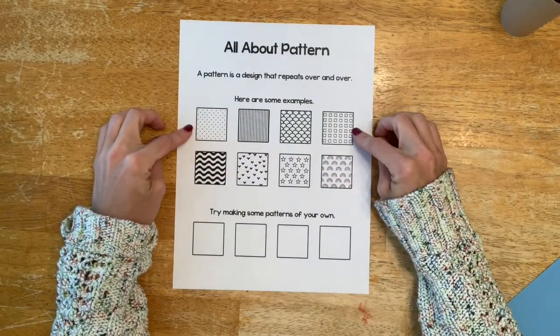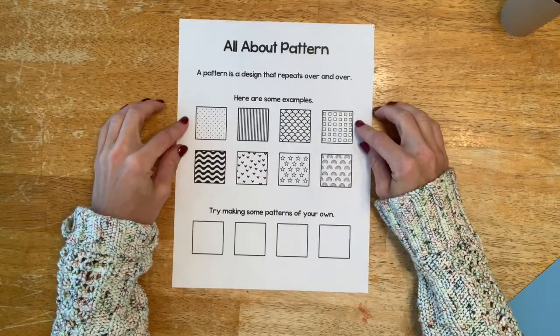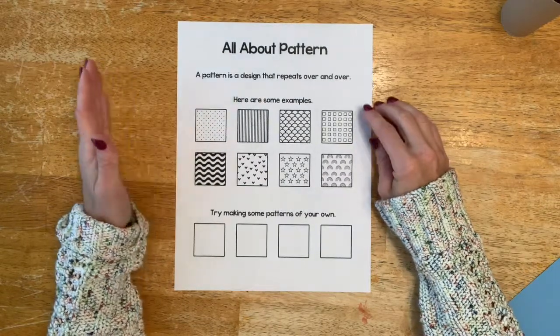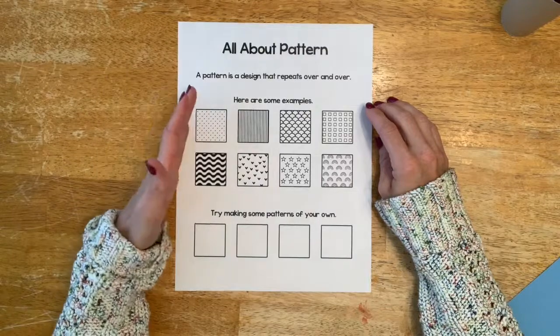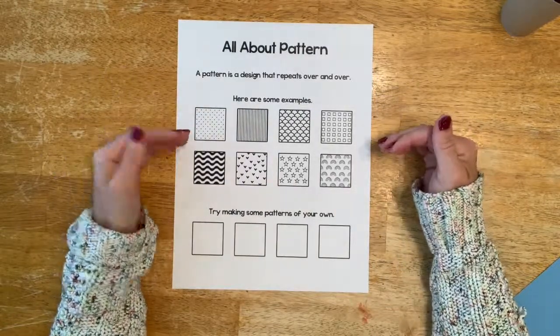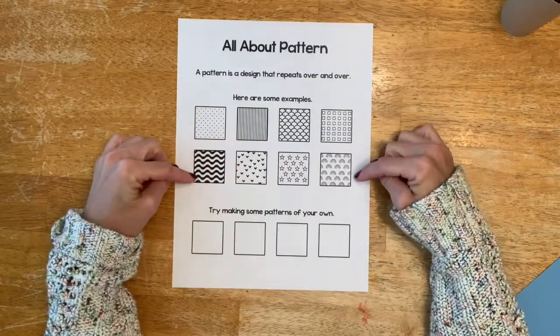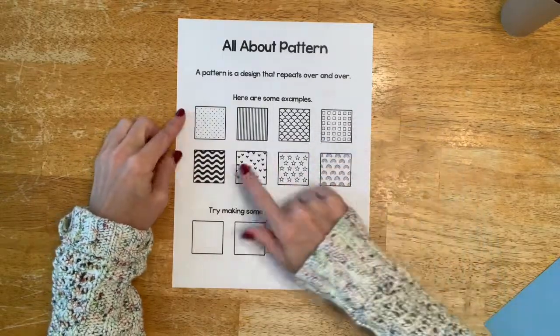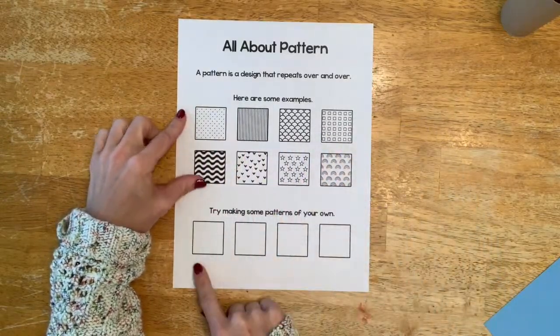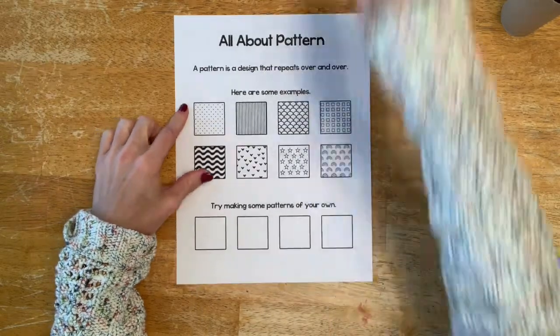Talk to the kindergartners about what pattern is - that a pattern is a design that repeats over and over. Usually in kindergarten they've talked about pattern a little bit, they've learned AB patterns, so they kind of know the concept. This is a little bit different.